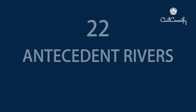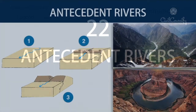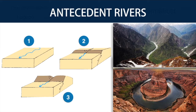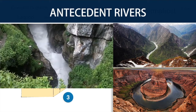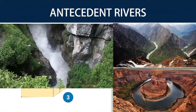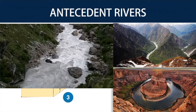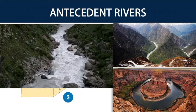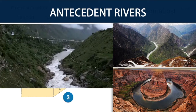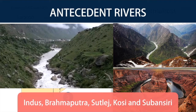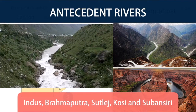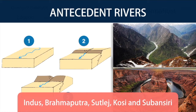Number 22: Antecedent Rivers. An antecedent river is a stream that maintains its original course and pattern despite the changes in underlying rock topography. The Himalayan rivers are great examples of antecedent origin. These rivers originated well before the Himalayan region was uplifted. The rivers Indus, Brahmaputra, Satloj, Kosi, and Subhansari originated on the Tibetan side and now traverse the existing mountain ranges, cutting deep gorges.